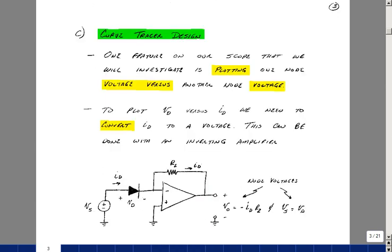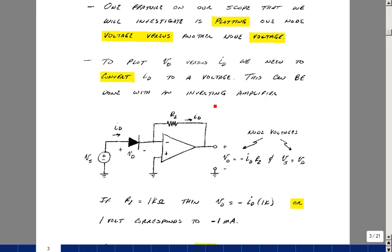Suppose we design a curve tracer where we could collect the data points that we need for the Shockley equation. Now our oscilloscope in lab will plot voltage versus time, but you can actually disable the time axis and plot voltage versus voltage. In our case, we want to plot the current of the diode versus the voltage across it, so we need to convert our diode current into a voltage.